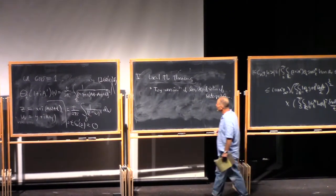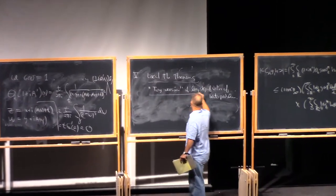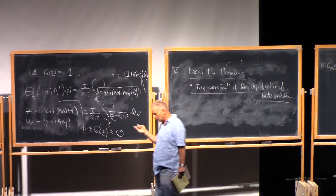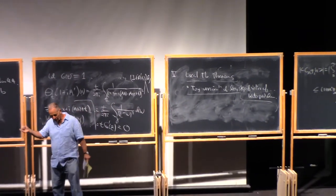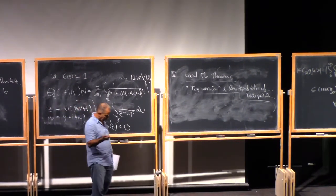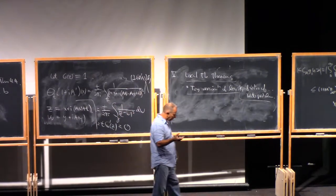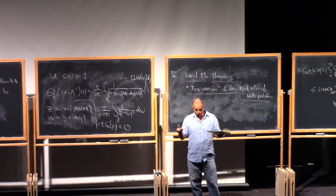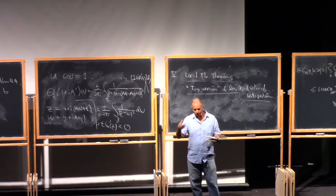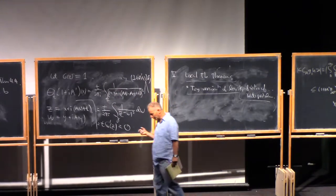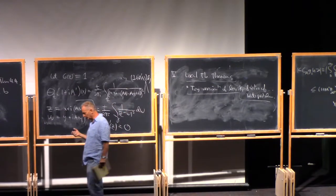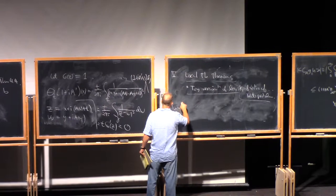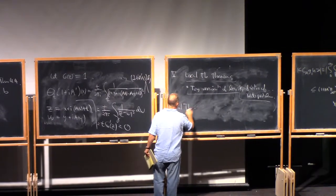It's going to turn out that the thing we're going to do is sort of a toy version of the key step of the solution of the Kato problem. My original plan was to talk about that, but we won't get there. If you're interested, it's in section six of the notes, which we will not get to. But this already gives you some idea of some of the essential ideas that underlie that proof. So, what do I mean by a local T of B theorem?